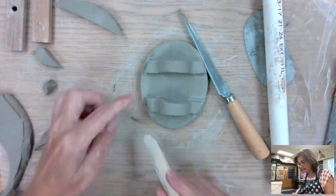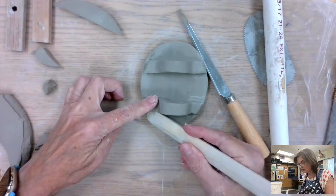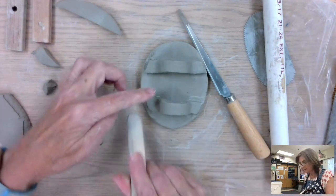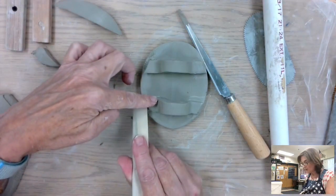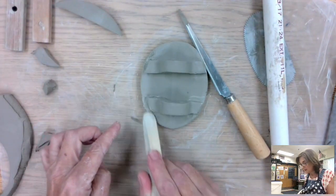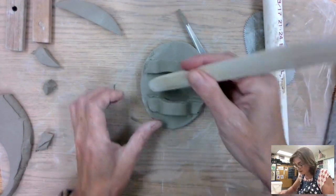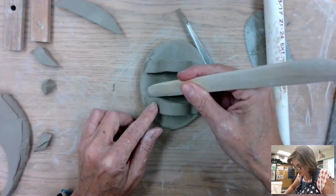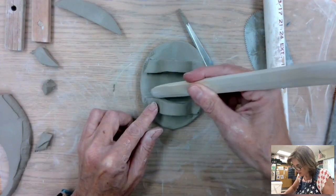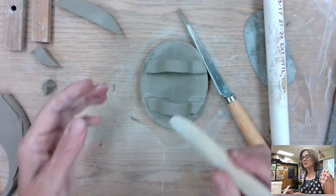You can, again, soften that outside edge later. I'm not so worried about that. But the blending part of this is super important so that the clay, one piece, adheres to the other. Now, do you have to do that in every instance? No, there's instances where you don't. But with this, this is going to be a real strength thing. So it's going to be really important.